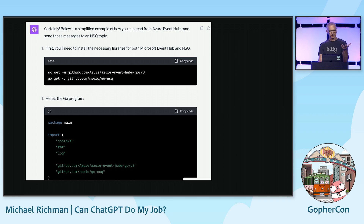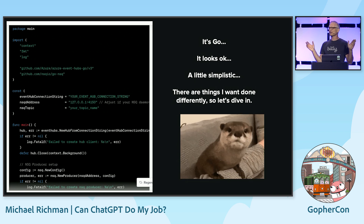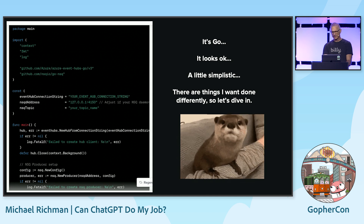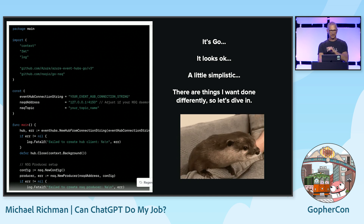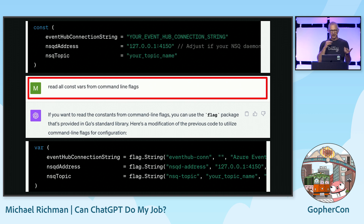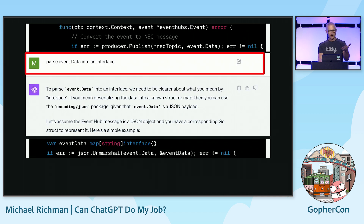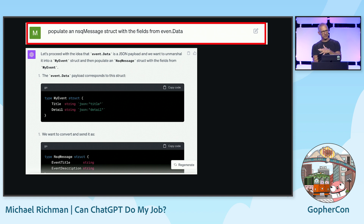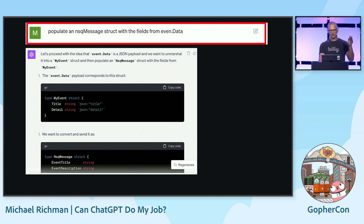You've probably all interacted with ChatGPT. It starts off with 'oh yeah, I can do it.' At first blush, first pass I get, it's Go, it looks okay, it's a little simplistic. There are some things I want to do differently. So I started the back and forth — changing const variables to flags, parsing event data from Event Hubs into an interface, populating the NSQ message with fields from event data. It introduced structs, which I later told it not to do.